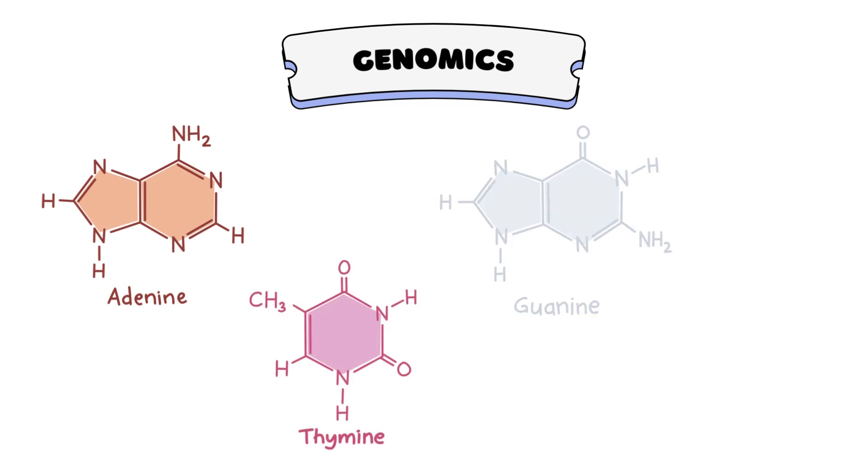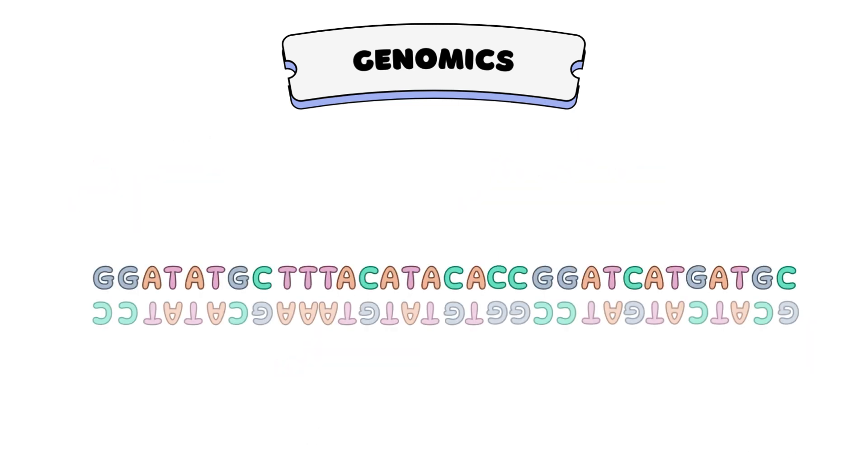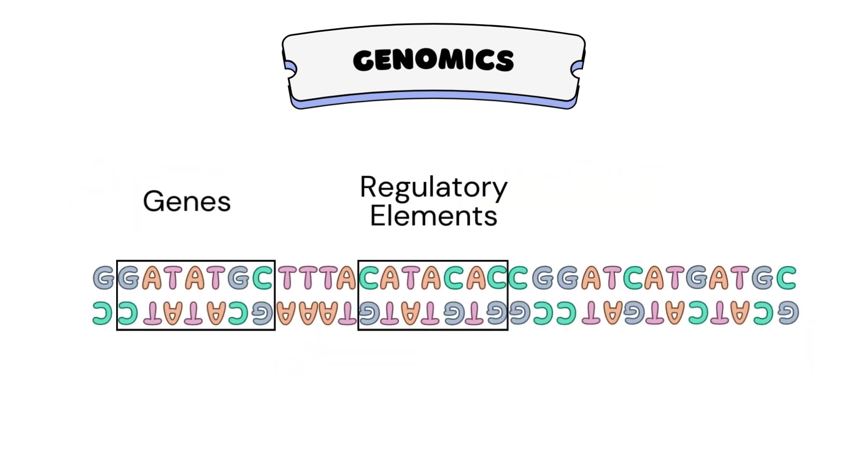adenine, thymine, guanine, and cytosine. They are arranged in unique sequences to form genes, regulatory elements, and other key genetic features.